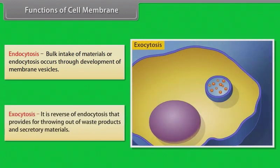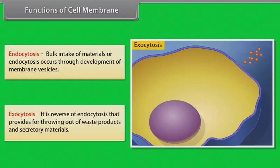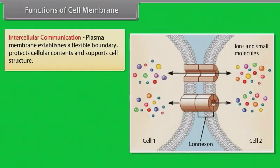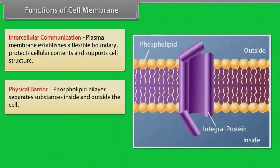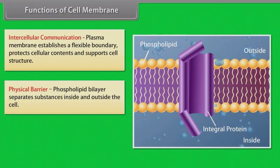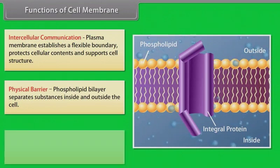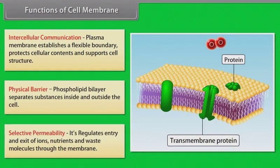Cytoplasmic bridges — plasmodesmata and gap junctions form cytoplasmic bridges between adjacent cells. Osmosis is caused by the presence of special water channels in the membranes. Endocytosis — bulk intake of materials occurs through development of membrane vesicles. Exocytosis is the reverse of endocytosis, providing for the expulsion of waste products and secretory materials. Intercellular communication — the plasma membrane establishes a flexible boundary, protects cellular contents and supports cell structure. The phospholipid bilayer separates substances inside and outside the cell, and selective permeability regulates entry and exit of ions, nutrients and waste molecules.